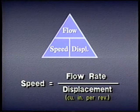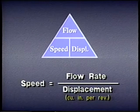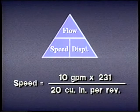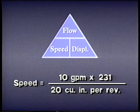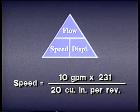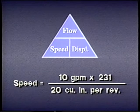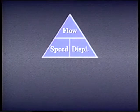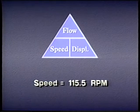The displacement is usually expressed in cubic inches per revolution. For example, to figure the speed of a motor with a 20 cubic inch displacement and a flow rate of 10 gallons per minute, we multiply 10 GPM times 231 — the number of cubic inches in one gallon — and divide by the displacement of 20 cubic inches. The speed is 115.5 revolutions per minute.